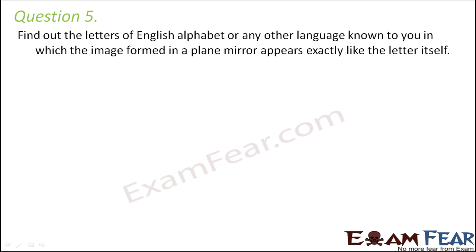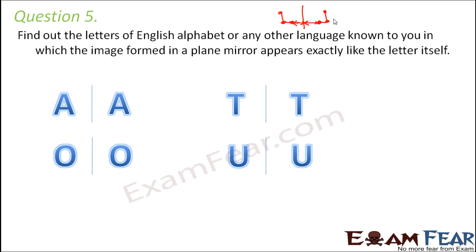Question number 5. Find out the letters of English alphabet in which the image formed in a plane mirror appears exactly like the letter itself. Like we had taken that example of L. If here you have a mirror, this part of L is at this distance. So this will be formed at this point. This point will be formed here, this point will be formed here. So basically this L will not look alike. So L is not the appropriate example.